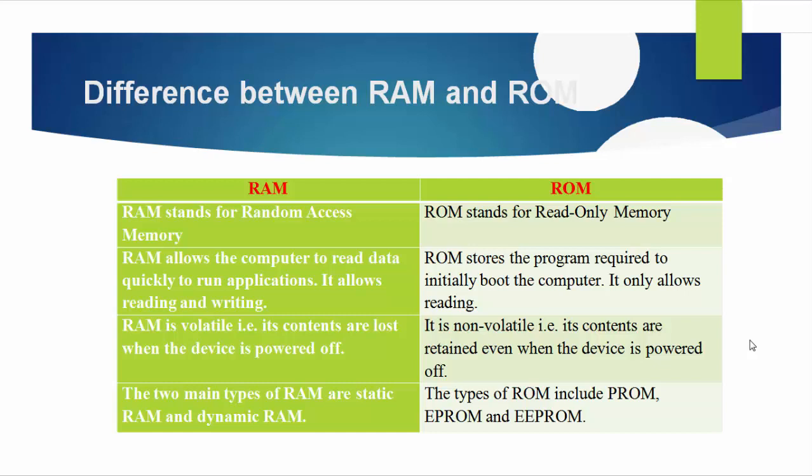RAM is volatile — its contents are lost when the device is powered off. But ROM is non-volatile memory, so the information remains even when the system is switched off. The two main types of RAM are Static RAM and Dynamic RAM. The types of ROM are PROM, EPROM, and double EPROM. These are the differences between Random Access Memory and Read-Only Memory.